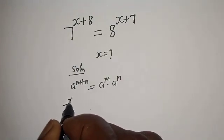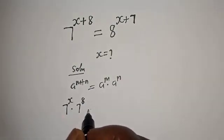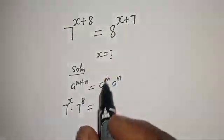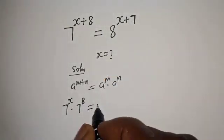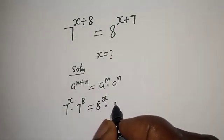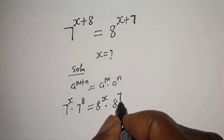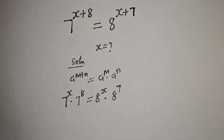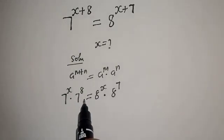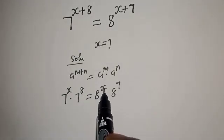So 7 raised to power x multiplied by 7 raised to power 8 is equal to 8 raised to power x plus 7, which can be written as 8 raised to power x multiplied by 8 raised to power 7. Now let's divide both sides of the equation by 7 raised to power 8 and 8 raised to power x.